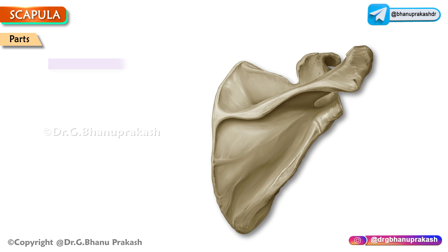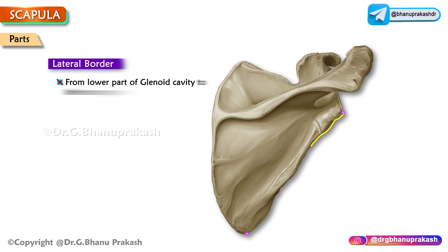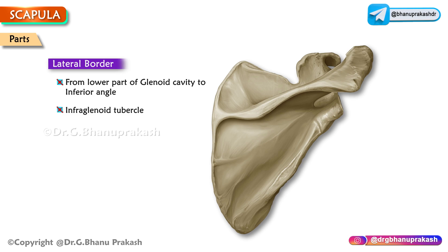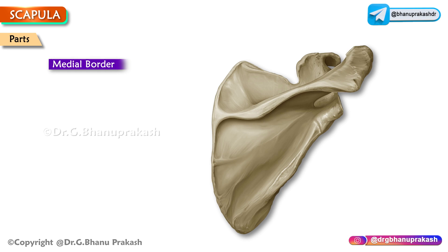The lateral border extends from the lower part of the glenoid cavity to the inferior angle. The infraglenoid tubercle is a rough, raised area just below the glenoid cavity.